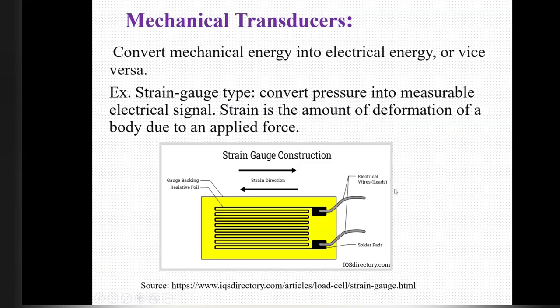The next transducer is the mechanical transducer. As its name implies, it converts mechanical energy into electrical energy or vice versa. Here, a strain gauge type is shown, which converts pressure into a measurable electrical signal. Strain is the amount of deformation of a body due to applied force.